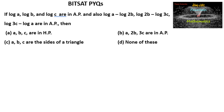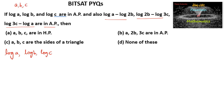Given that log A, log B and log C are in AP. And also, log A minus log 2B, log 2B minus log 3C, and log 3C minus log A are also in AP. We know that if A, B, C are in arithmetic progression, then 2 times B is equal to A plus C. So let us apply this concept here.